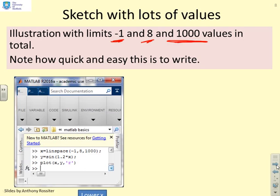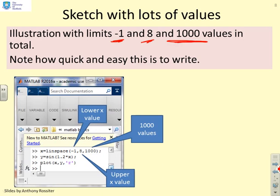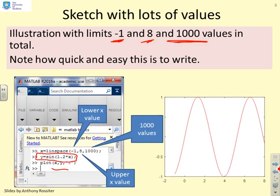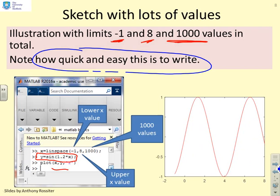Because that gives me a very nice plot. You can see here lower value of X, upper value of X, 1000 values. Then I've calculated my output values with a single statement Y equals sine 1.2 times X. Then I've said plot and there's the plot of your sine curve 1.2X between minus 1 and 8. The key thing to note is how quick and easy it is to do this. Three lines and I've calculated 1000 values and produced a plot.